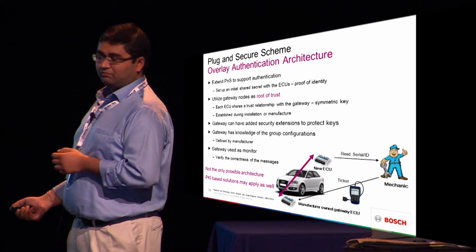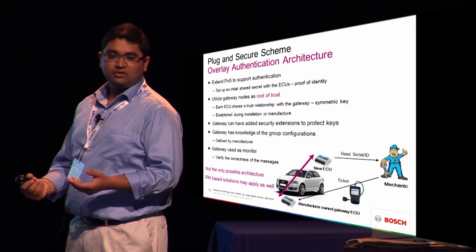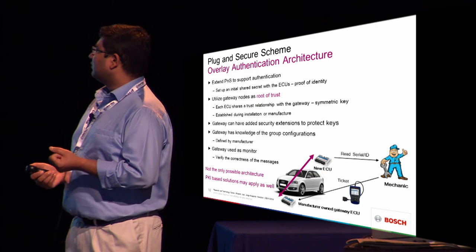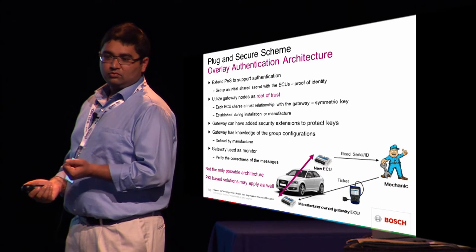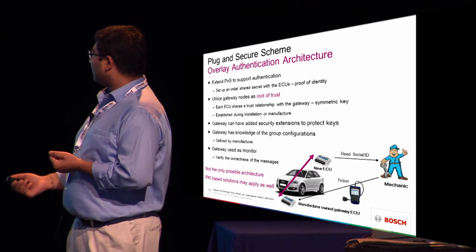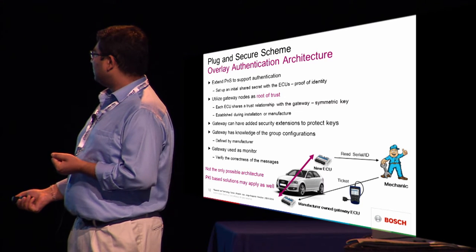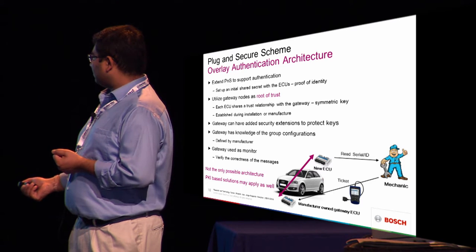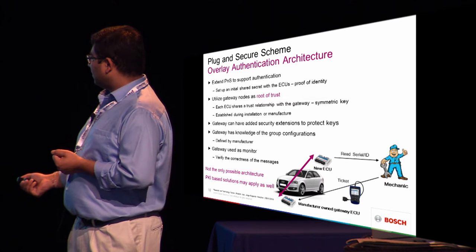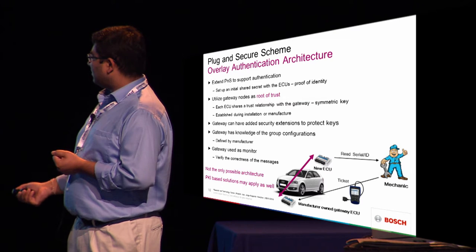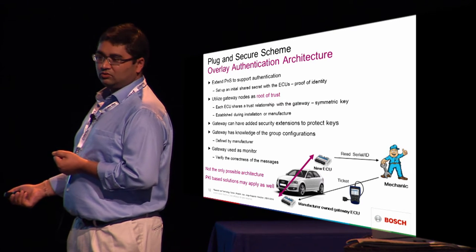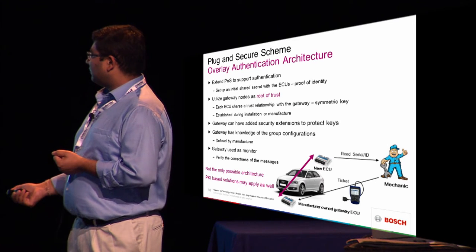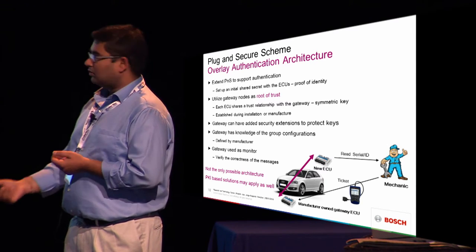All cars have a powerful ECU called the gateway node which does a lot of routing functionality. We can use that as a root of trust. When the car is being manufactured or a mechanic is installing a new ECU, we put a pre-shared key or pre-shared trust relation, establishing trust between the new ECU and the gateway ECU while installing. The gateway then becomes the root of trust for all future operations.